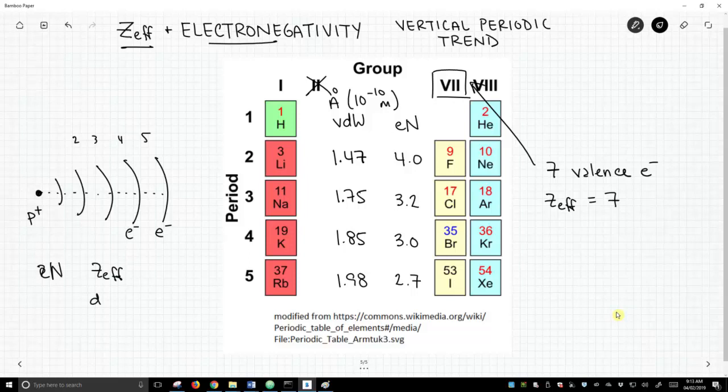So electronegativity is not only driven by effective nuclear charge, but it's also controlled by the distance over which that charge is exerted. It's a little bit like gravity. Gravity is not just about the masses of the two objects, it's about how far they are apart, and electronegativity is very much the same.